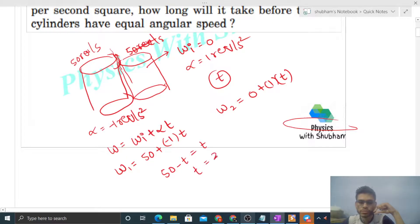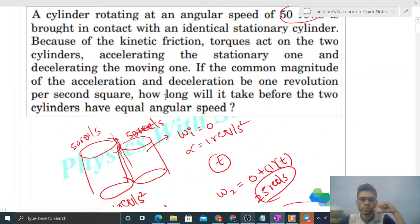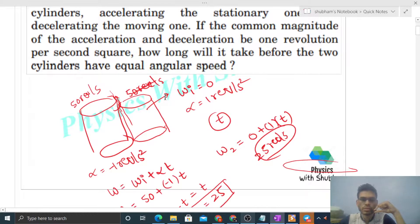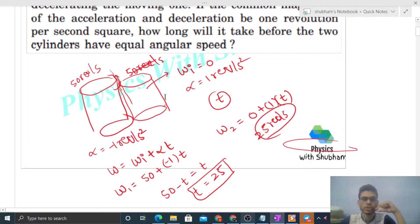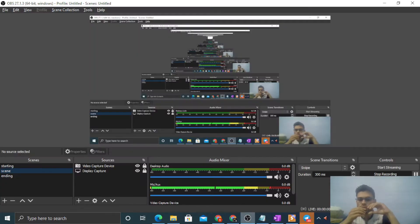You can also find out the common angular velocity. The final common angular velocity will be, just put the value of t, that will be 25 revolutions per second. This is how we can find both these things. And you can see that after this, friction will stop acting because there will be no relative motion between the point of contact. Both will have the same velocity at the point of contact, so friction will stop. Anyway, I think you have understood. Let me know if you still have any confusion, we can discuss further. Okay guys, keep working hard, best of luck, bye.